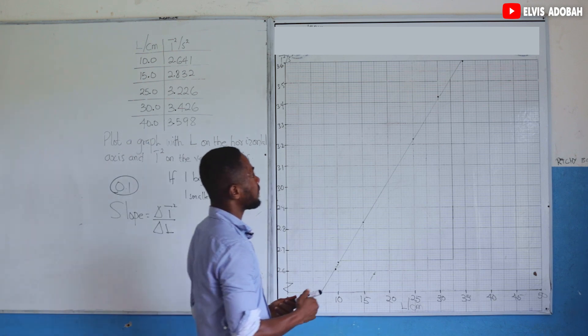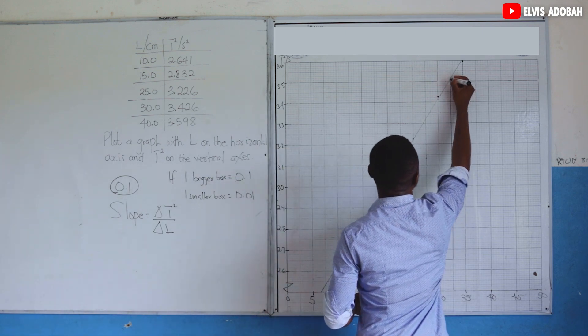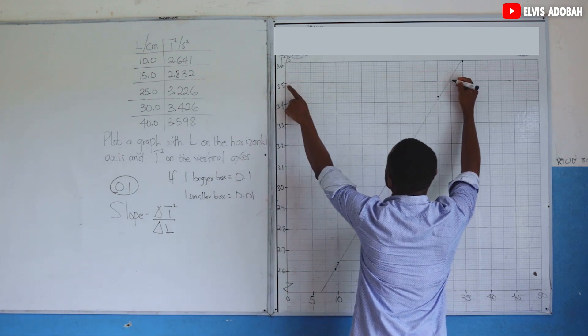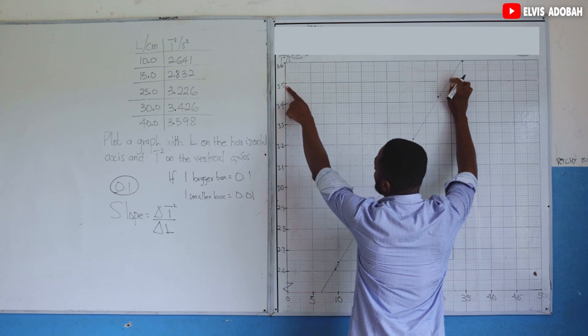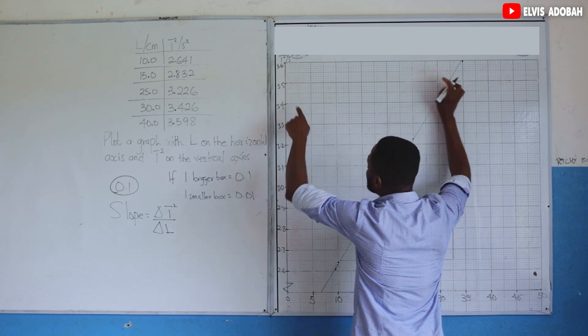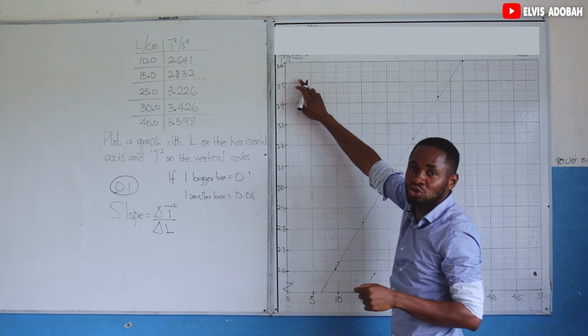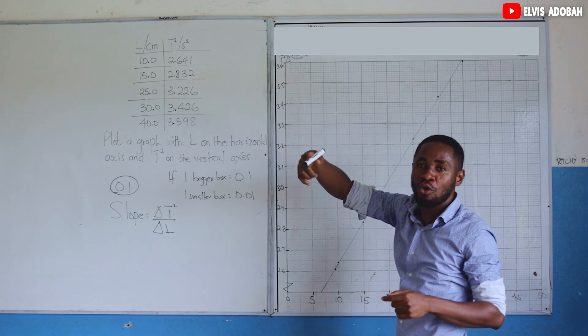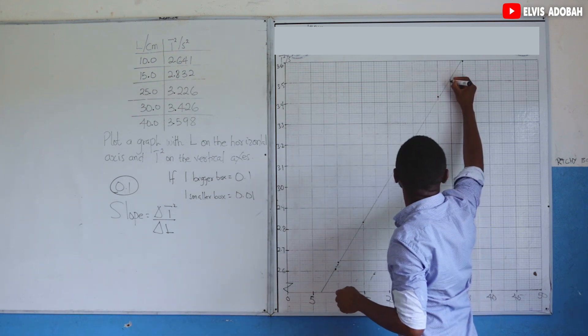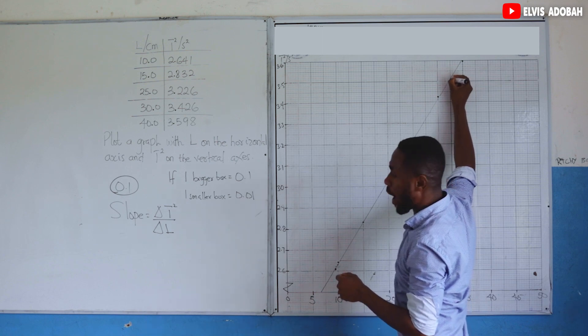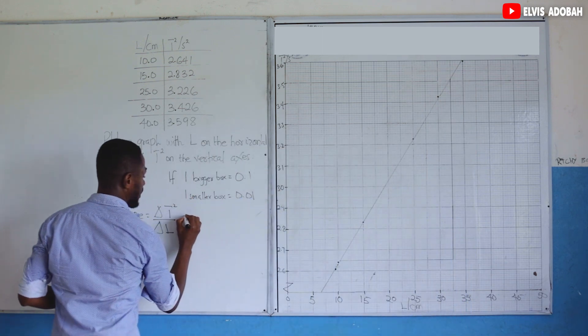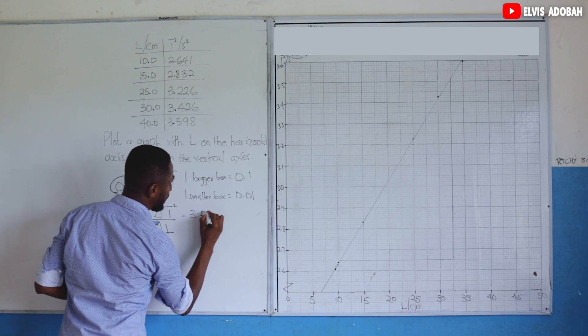So I look on my graph. Over here I have one smaller box above the 3.5. And since each bigger box is 0.1, each smaller box will be 0.01. So this is 3.5, 3.51. So we have 3.51.